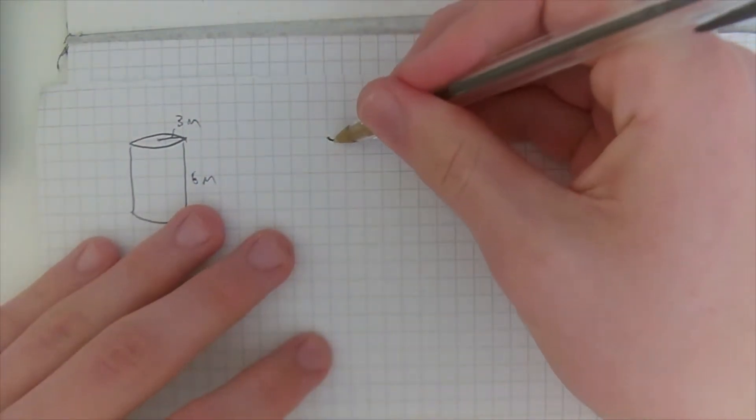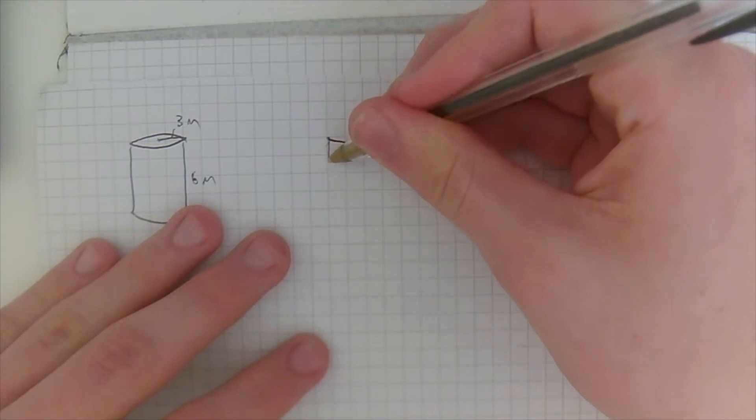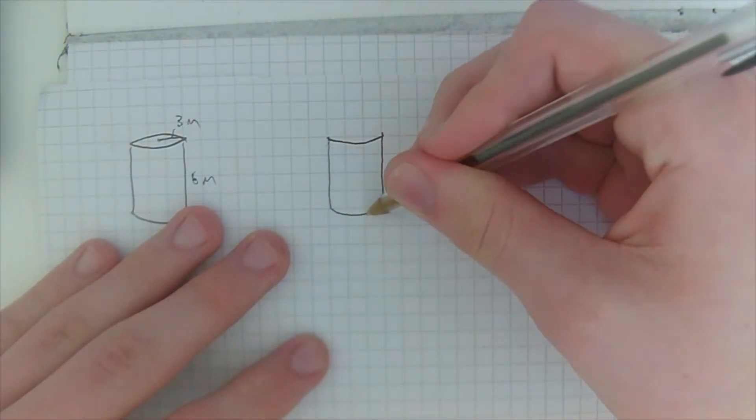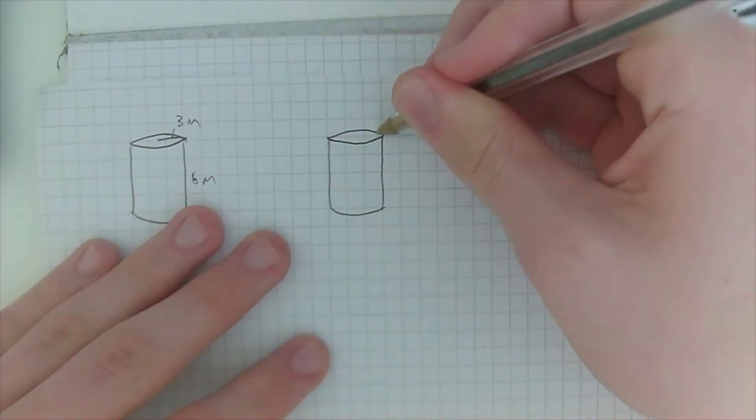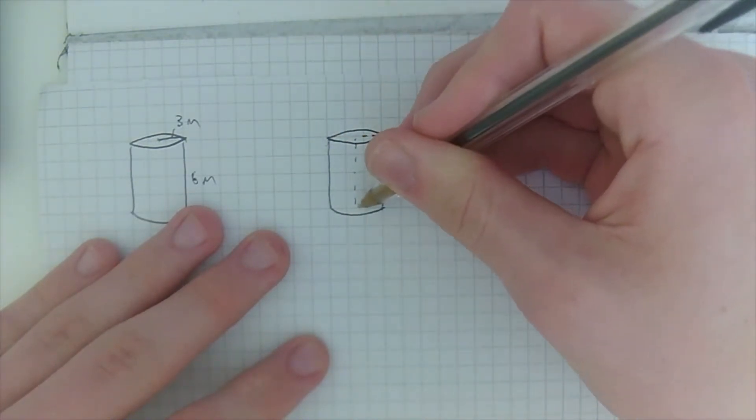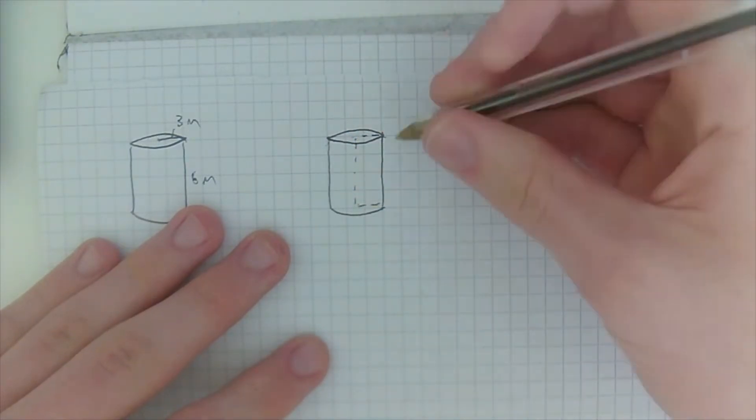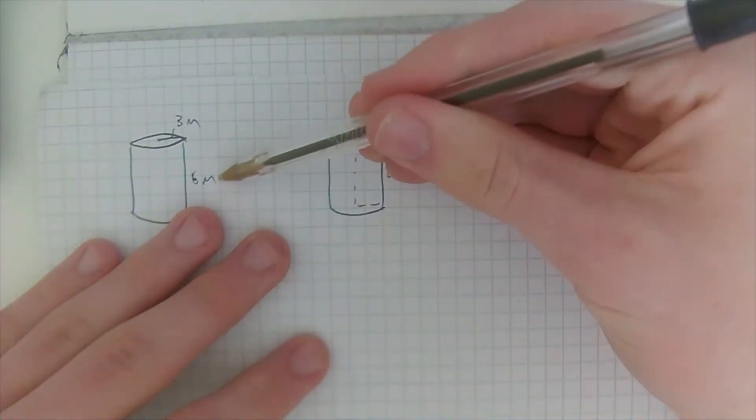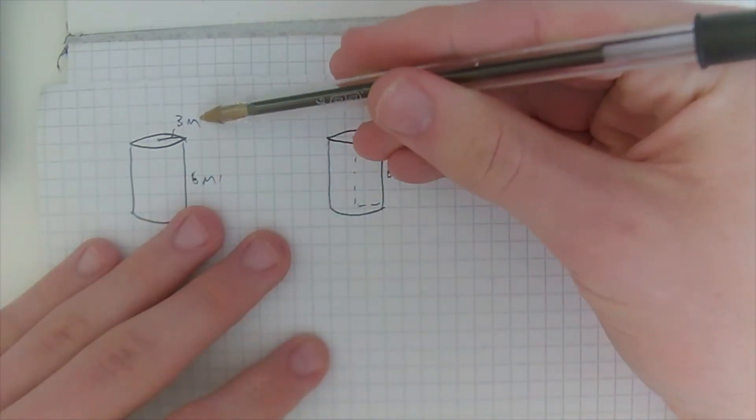So the first thing we want to do is take a cross-sectional area, or at least half of it, of this cylinder, as you can see by the dotted lines I'm drawing now. And this rectangle is going to have a height of six meters and a length of three meters, which are the height and radius of the cylinder.